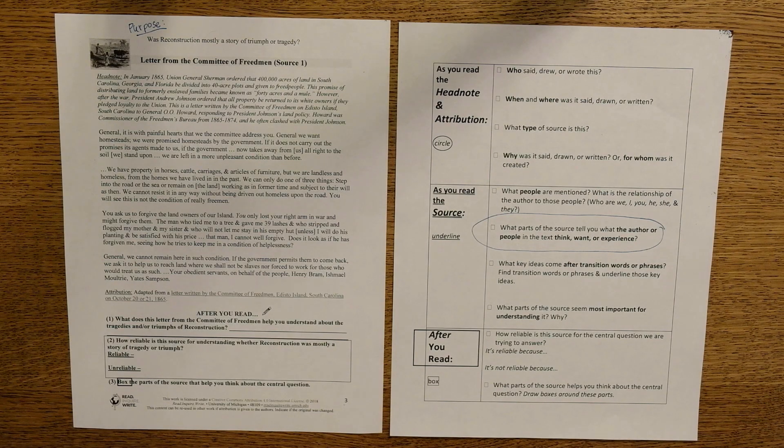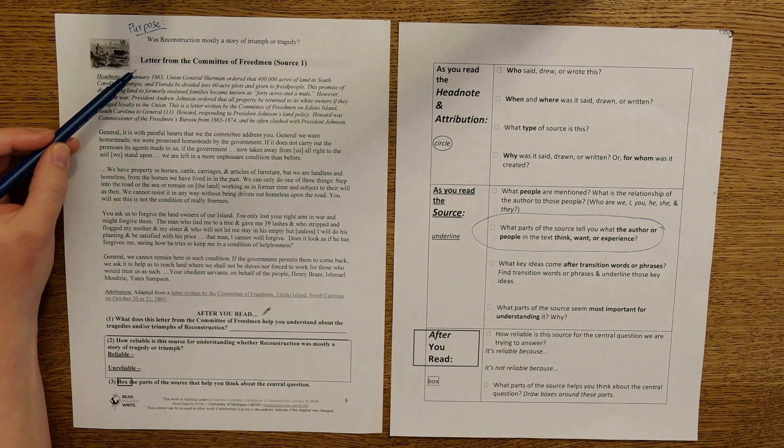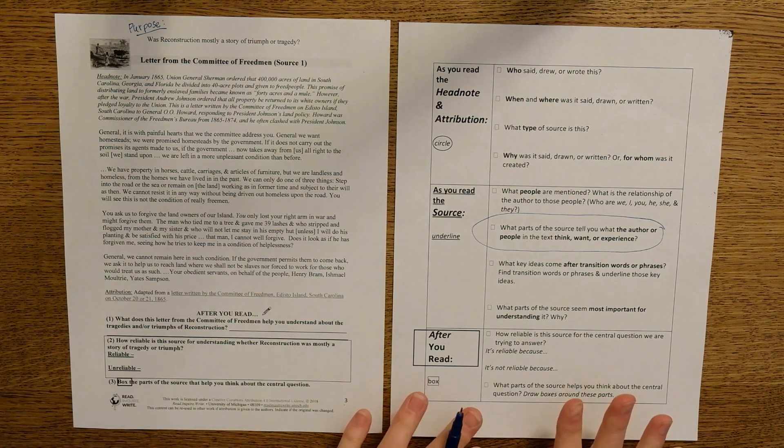Okay, let's read some sources. I have a letter from the Committee of Freedmen, source number one here, as well as a copy of the Big Bookmark to help me make sense of this source while we read.